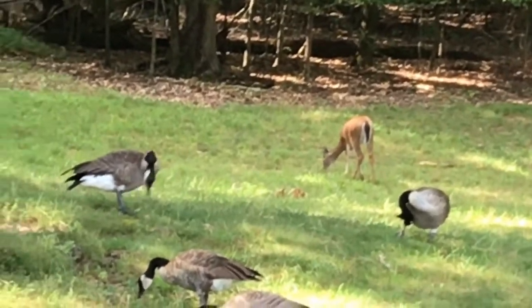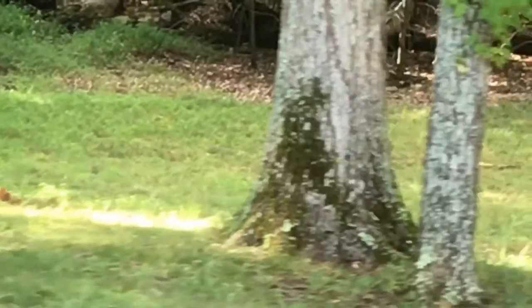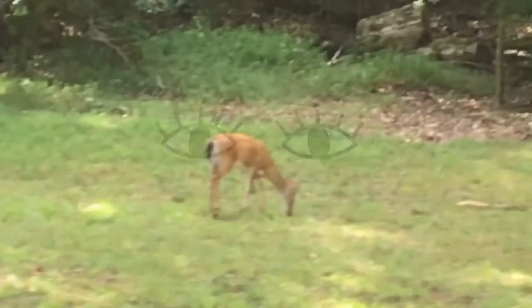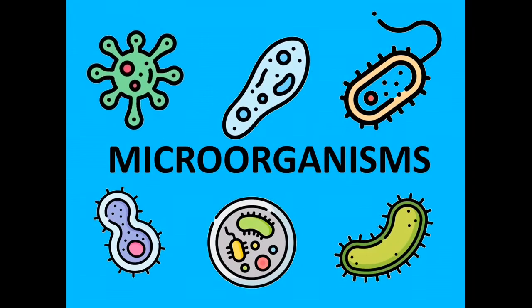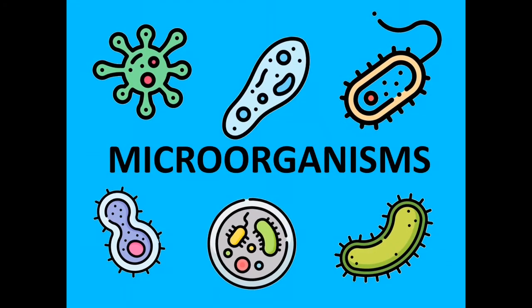Out in nature, we can see many living things like animals and plants. But did you know that there are living things so small that we can't see them with the naked eye? These are microorganisms, and in order to see them, we need a special tool called a microscope.